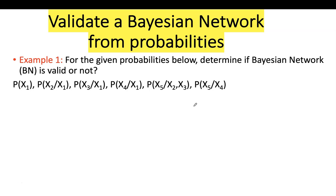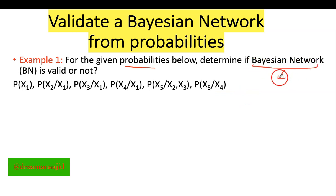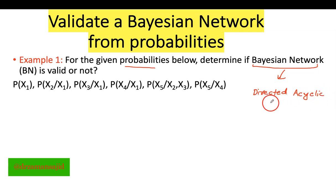There are two examples: example number one and a second example as well. It is saying that for the given probabilities below, determine if the Bayesian network is valid or not. This is the system of our probabilities. Before I go into the solution, keep in mind that a Bayesian network — the BN model — has some properties. One of the properties is that it is a directed acyclic graph.